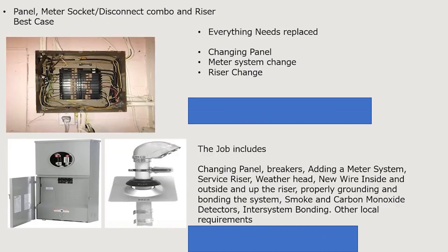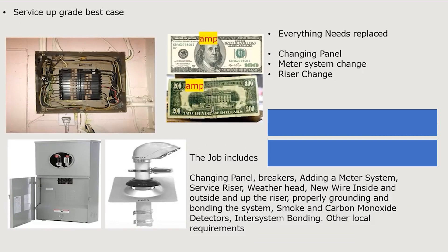Now let's talk about a true service change where everything needs to be replaced — the panel, the metering system, and the riser. This job includes the panel change, breakers, new metering system, service riser, weather head, new wire for inside and out and up the riser, plus proper grounding, bonding, and all other required items. Estimated labor: $2,800 to $5,000 or more in extreme scenarios. Estimated material: $1,800 to $5,000. For reference, SER wire inside the house runs $6 to $11 per foot — at 50 feet that cost adds up quickly.